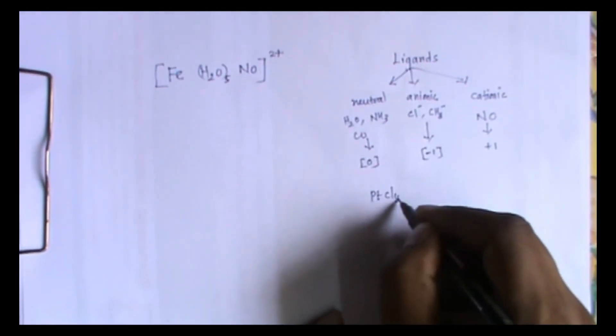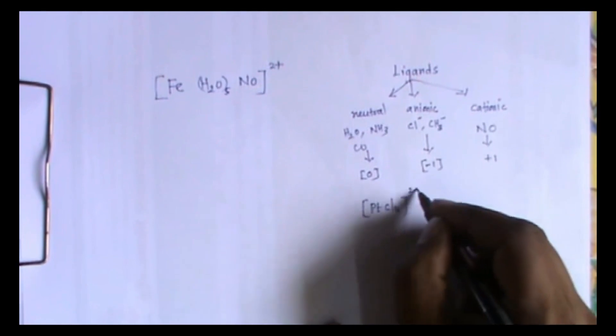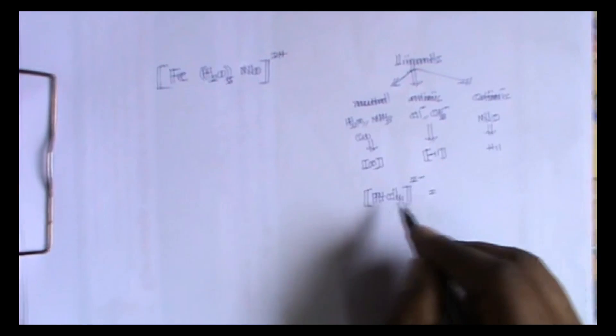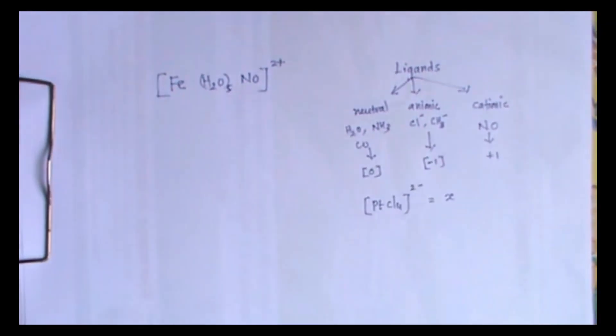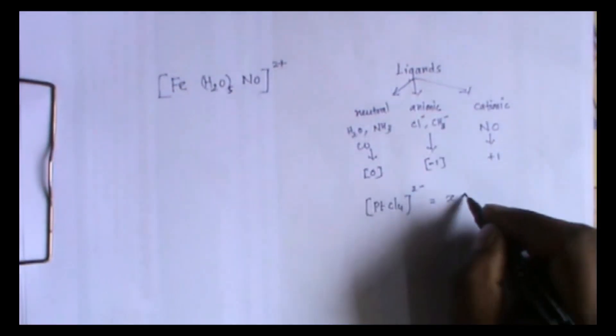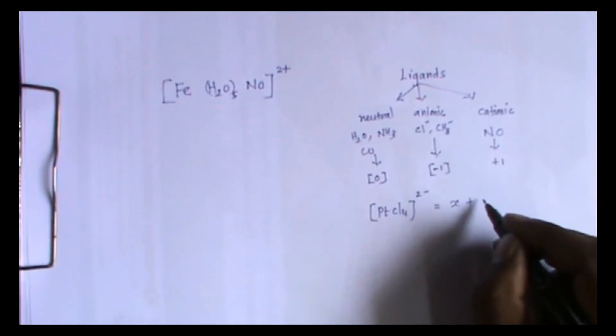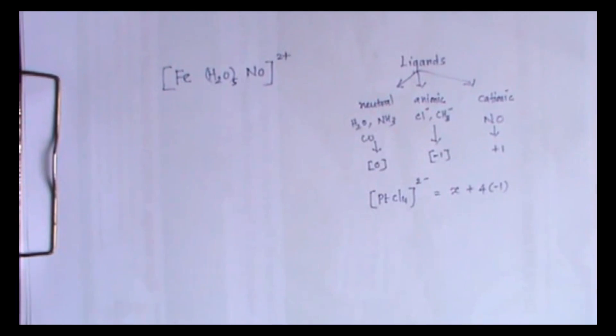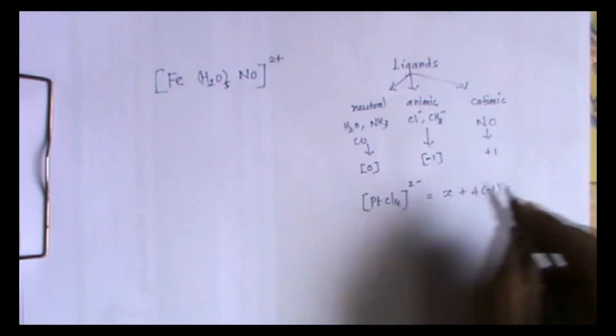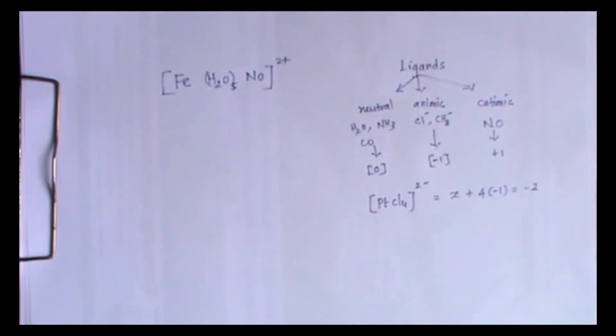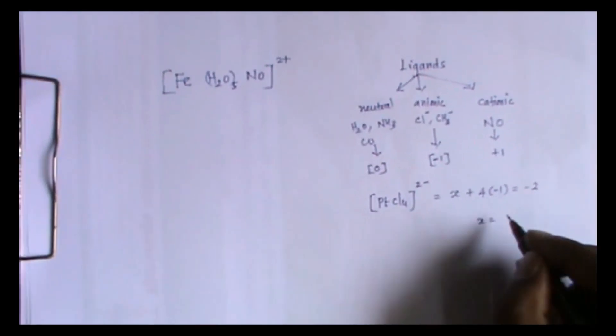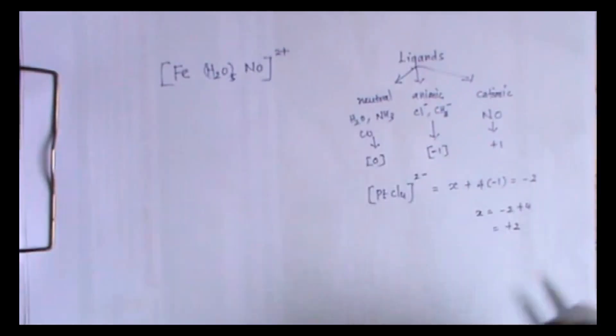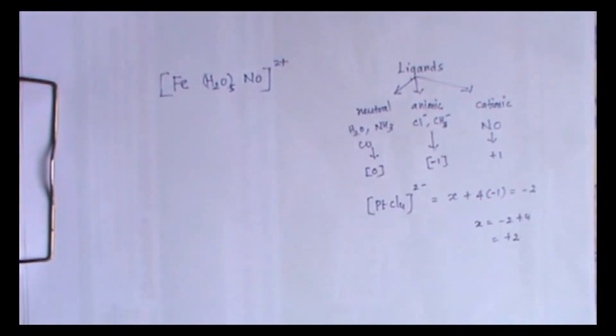For example, let's consider [PtCl4]2-. To find out the oxidation state of platinum, I take the oxidation state of platinum as x. For Cl I take minus 1. There are 4 Cl, so I get 4 times minus 1. After that I go for the charges. What I get is x equals minus 2 plus 4, which is plus 2. This is how we find out the oxidation state.